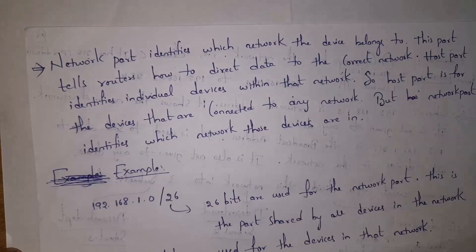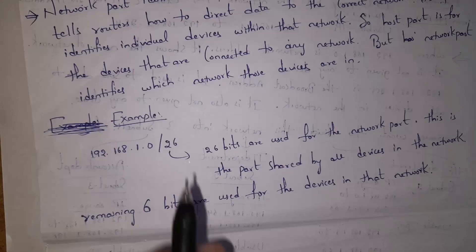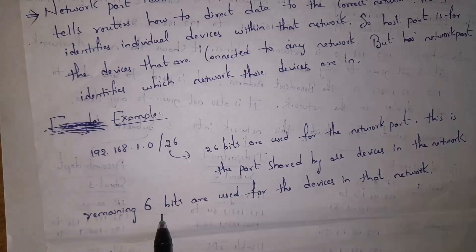IPv4 contains 32 bits. For example, if we use /26, then 26 bits are given to the network part and the remaining 6 bits are used for devices in the network, meaning up to 64 addresses can be in that subnet.